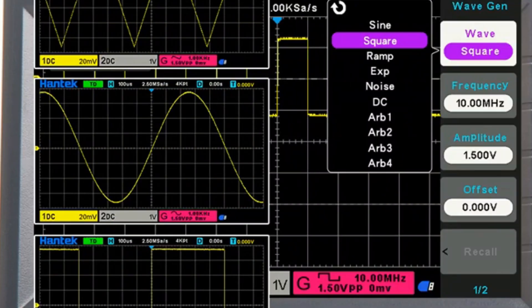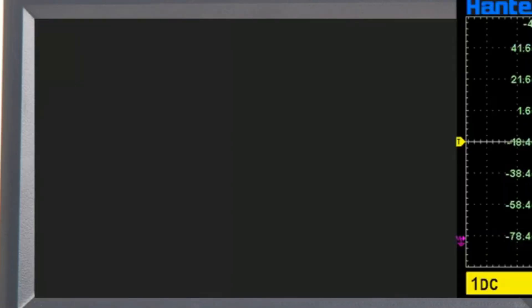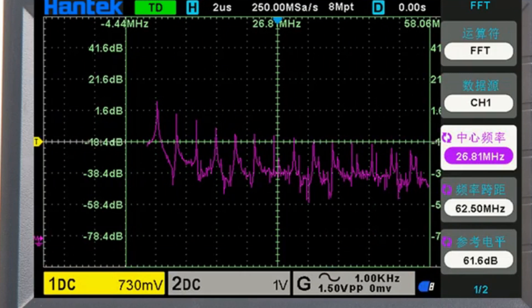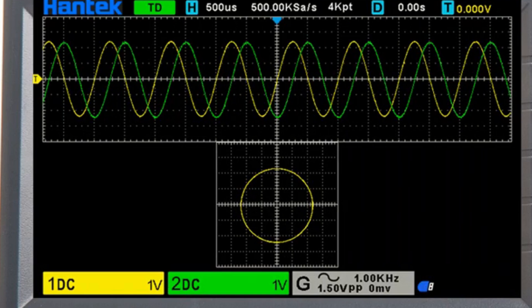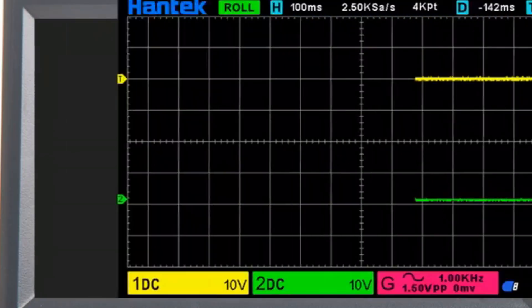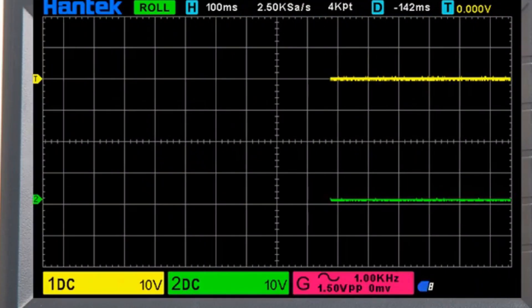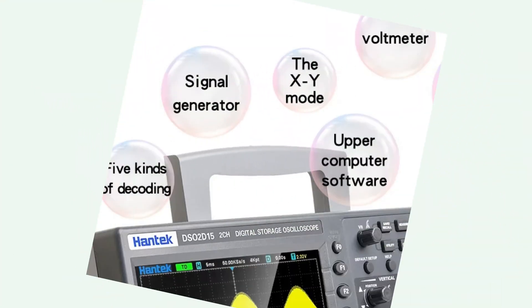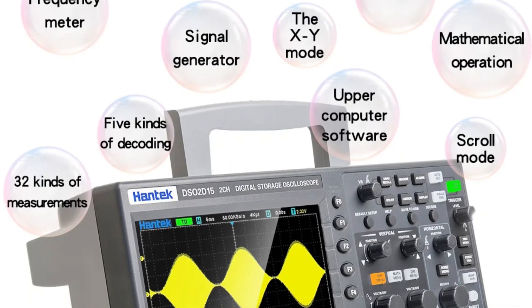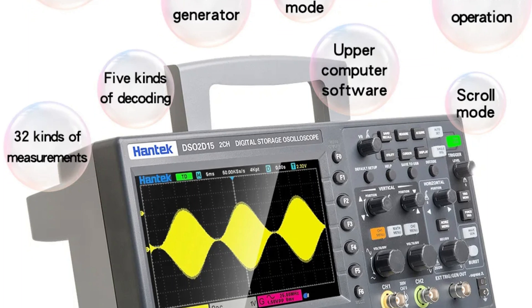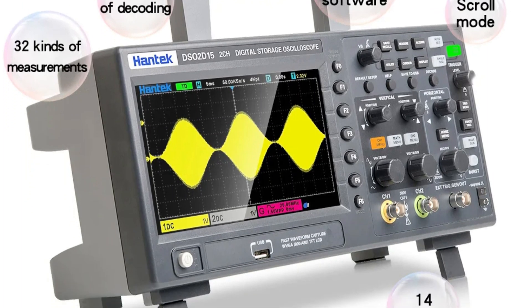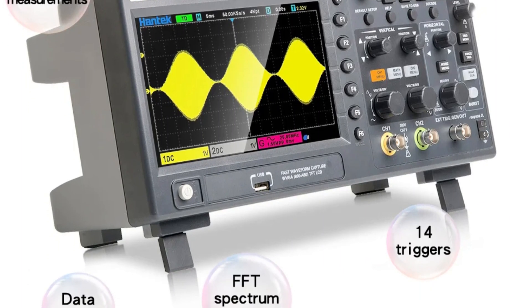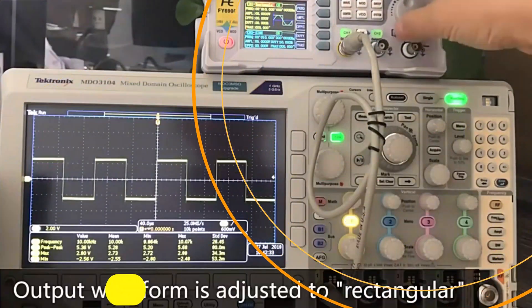With a bandwidth ranging from 100 MHz to 150 MHz, it caters to various applications. The device has two digital channels, enhancing its ability to handle various input signals simultaneously. Hantec, a reputable brand in the industry, ensures the DSO2-D15 meets the highest standards of quality and reliability. The DSO2-D15 is a testament to Hantec's commitment to innovation, combining advanced features with user-friendly functionality.